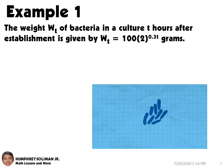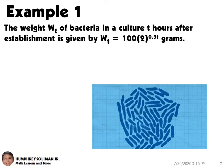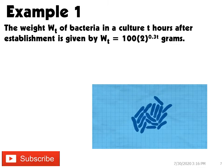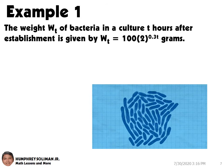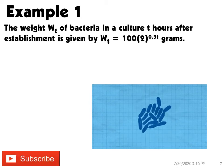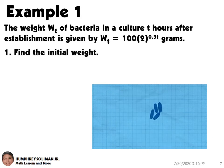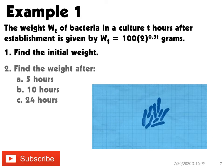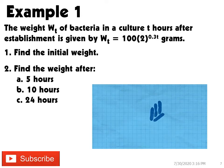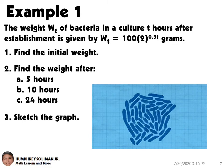Let's try example number 1 for growth of bacteria. The weight of bacteria, represented by Wt, in a culture after t hours is given by the formula Wt equals 100 times 2 raised to 0.3t grams. Number 1: find the initial weight. Number 2: find the weight after 5 hours, 10 hours, and 24 hours. Number 3: sketch the graph.